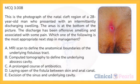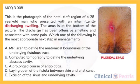Next: this is a photograph of the natal cleft region of a 28-year-old man who presented with an intermittently discharging swelling. The anus is at the bottom of the picture. The discharge has been offensive smelling and associated with some pain. Which is the most appropriate next step in management? A: MRI scan to define the anatomical boundaries of the underlying fistula's tract. B: CT to define the underlying abscess cavity. C: a prolonged course of antibiotics. D: laying open of the fistula between skin and anal canal. E: excision of the sinus and underlying cavity. This is a pilonidal sinus; classically a secondary sinus lies to one side of the midline. The primary sinus may form tracks through which secondary sinuses occur from rupture of an infected cavity with abscess and granuloma formation.